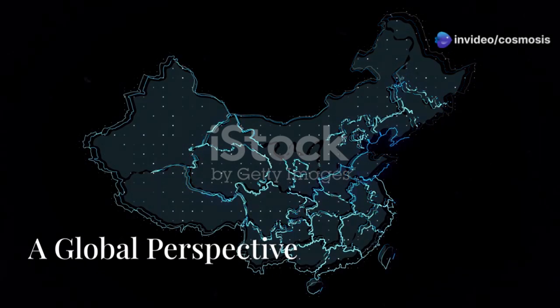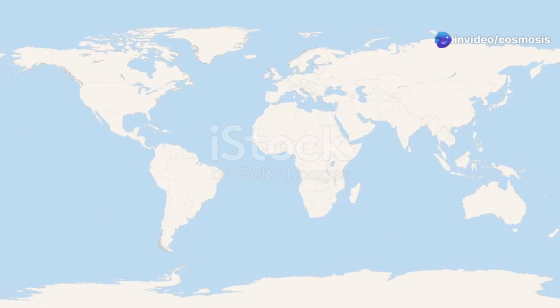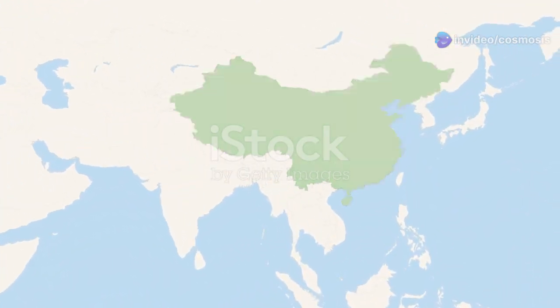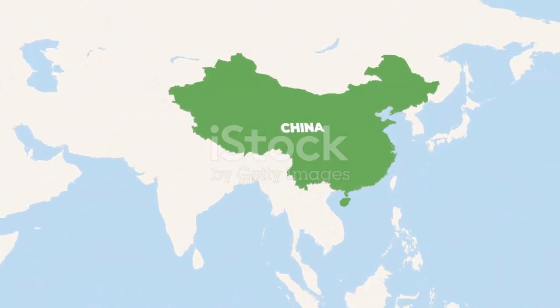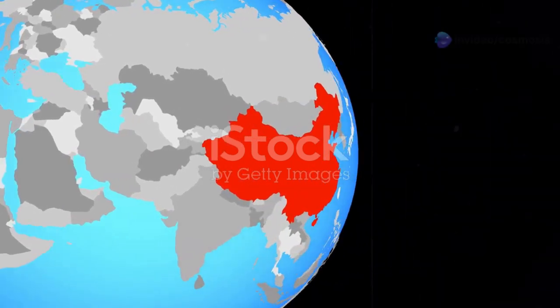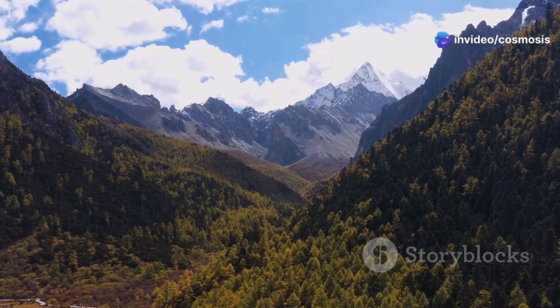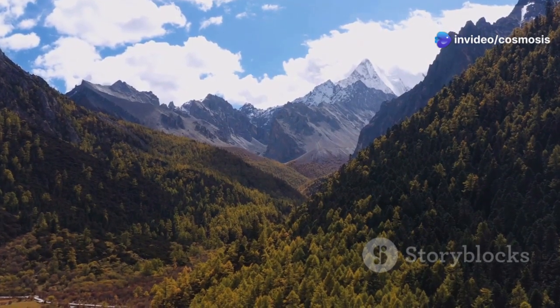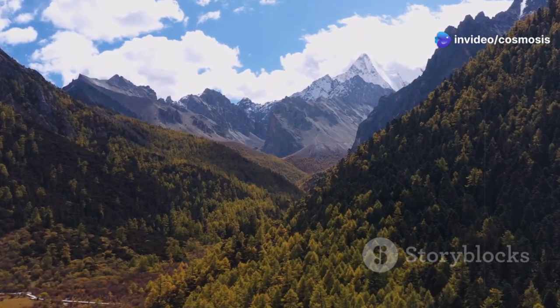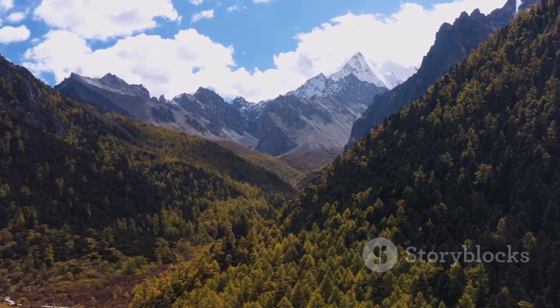China is a country of immense size, boasting the world's fourth largest land area. It spans over 9.5 million square kilometers, a figure that can be difficult to grasp without comparison. To put this into perspective, China is only slightly smaller than the entire continent of Europe. This vast landmass encompasses a wide range of geographical features, from towering mountains to expansive deserts and fertile plains.